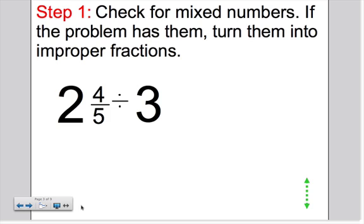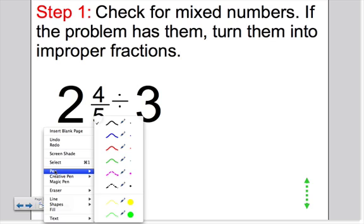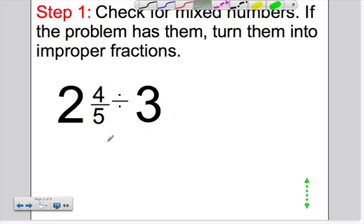Step number one, check for mixed numbers. If the problem has a mixed number, you need to turn it into an improper fraction. When I'm looking at my problem, I see that 2 and 4 fifths is a mixed number.